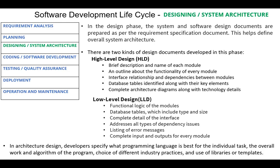There are two kinds of design documents developed in this phase: high-level design (HLD) and low-level design (LLD). The activities performed in high-level design include a brief description and name of each module, an outline about the functionality of every module, interface relationships and dependencies between modules, database tables identified with their key elements, complete architecture diagrams, along with technology details.